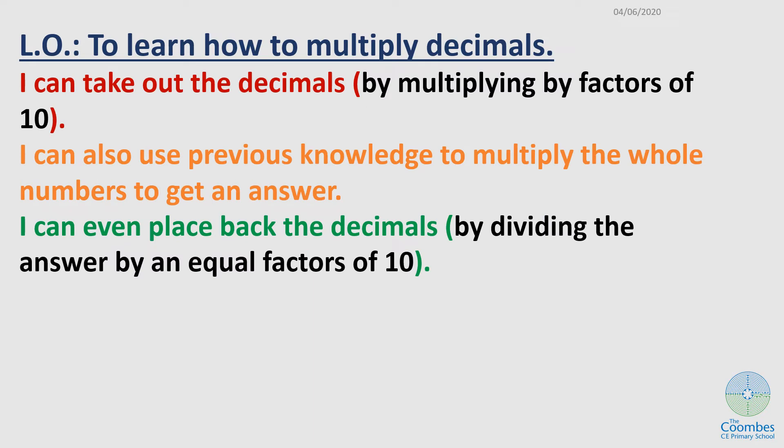Our learning objective is to multiply decimals. There are three success criteria to help you do that. First, that you can take out the decimal point.